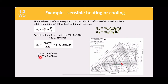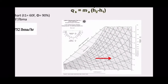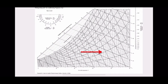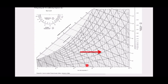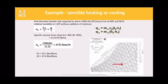h1 and h2 are found from the psychrometric chart using the dry bulb temperatures of State 1 and State 2. Since humidity is the same at both states, the red horizontal line connects both points, making it easy to read enthalpy. Multiply m_a by 60 to convert from per minute to per hour if needed.